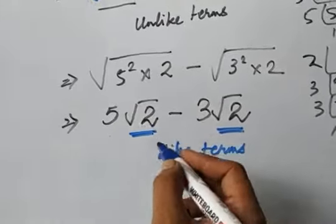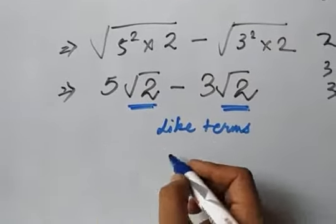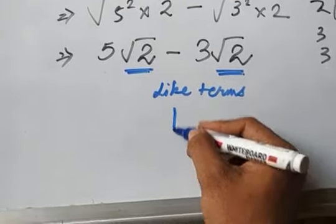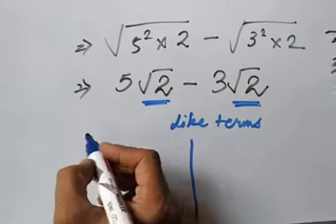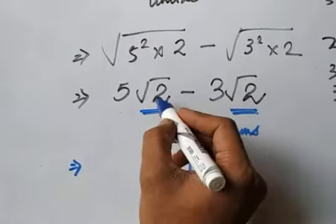And if they are like terms, then only we can add and subtract. Like I told you, there are two ways to understand this. I will tell you both. The first one is taking root 2 common.